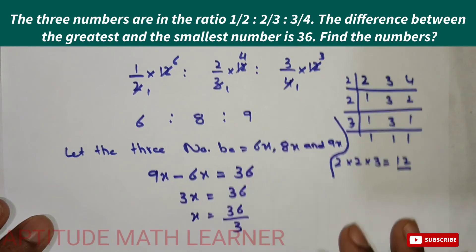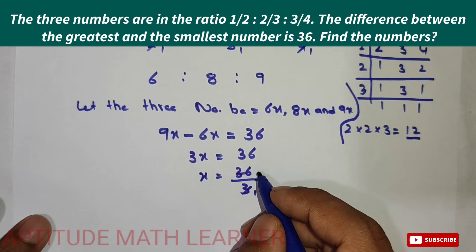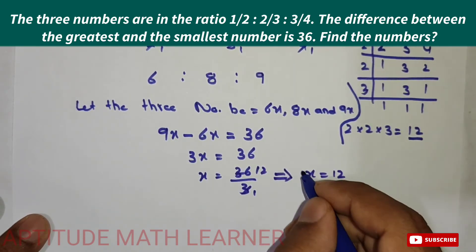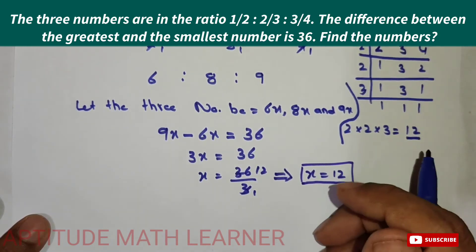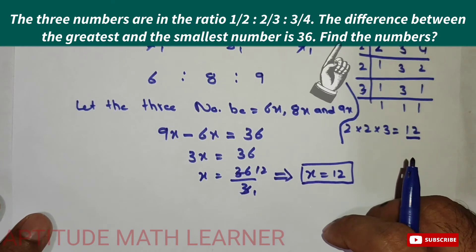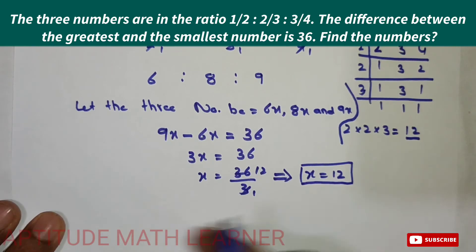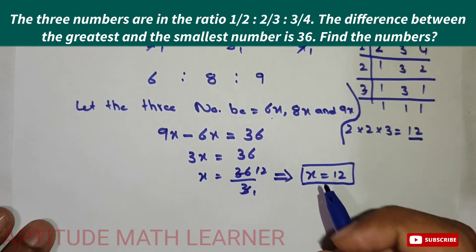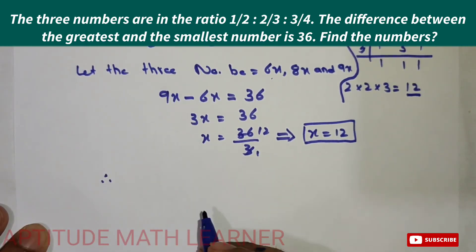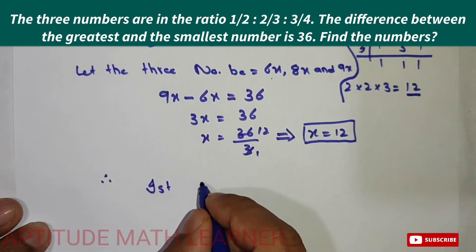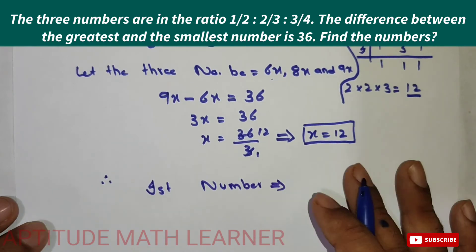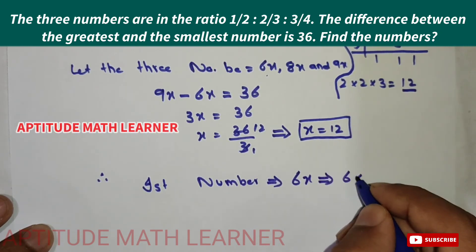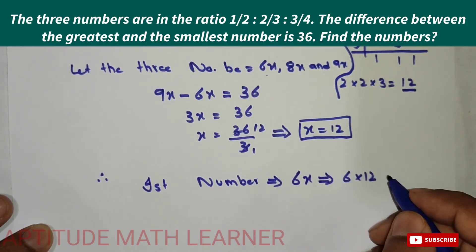Solving 3x = 36, we get x = 36 ÷ 3 = 12. So the value of x is 12. Now we can find all three numbers. The first number is 6x = 6 × 12 = 72.